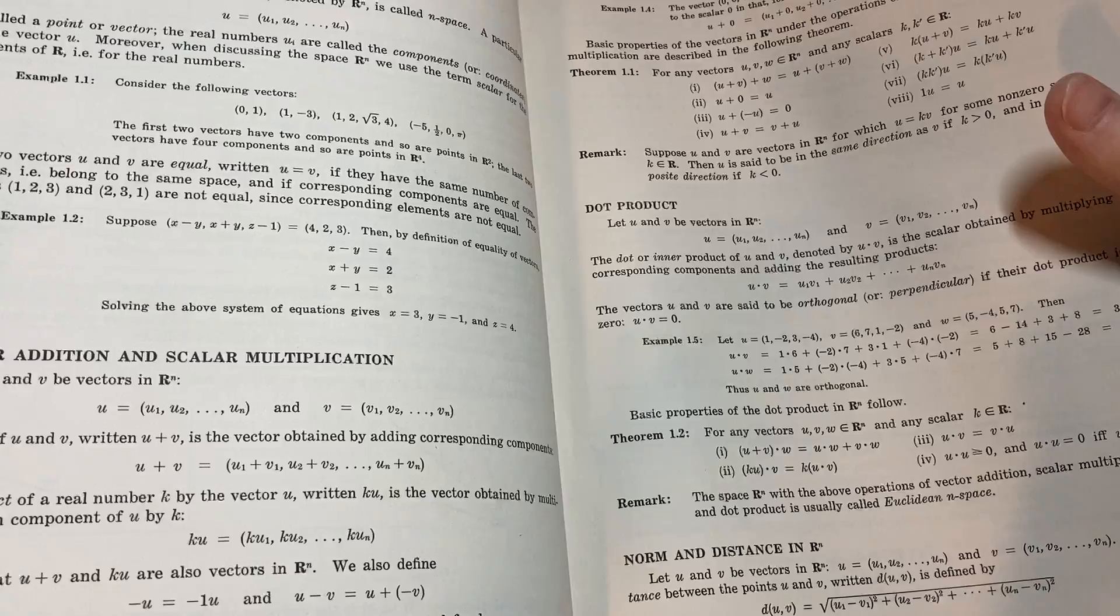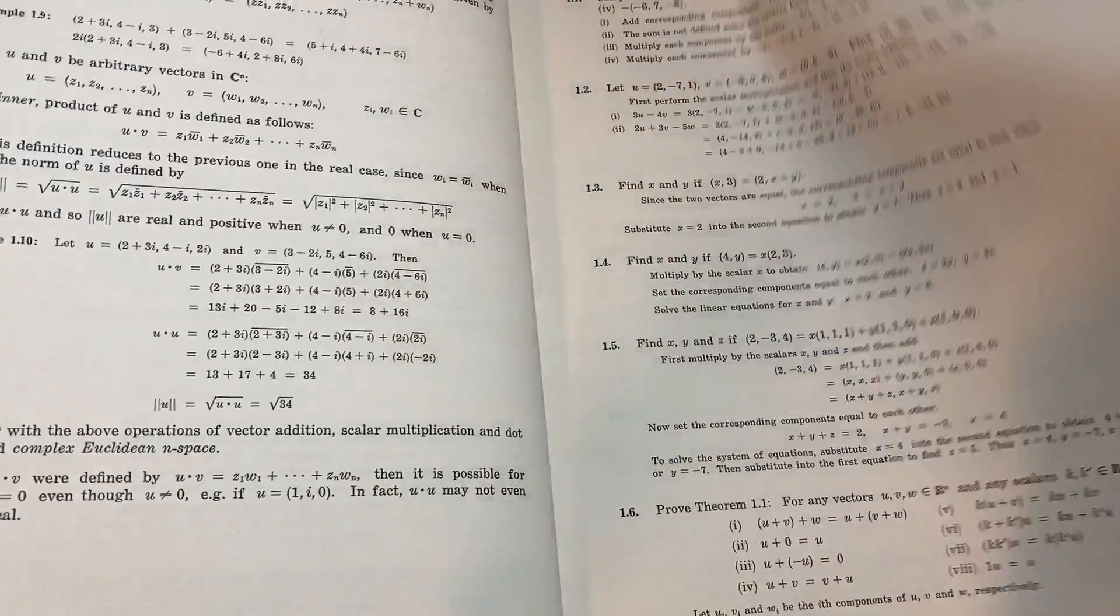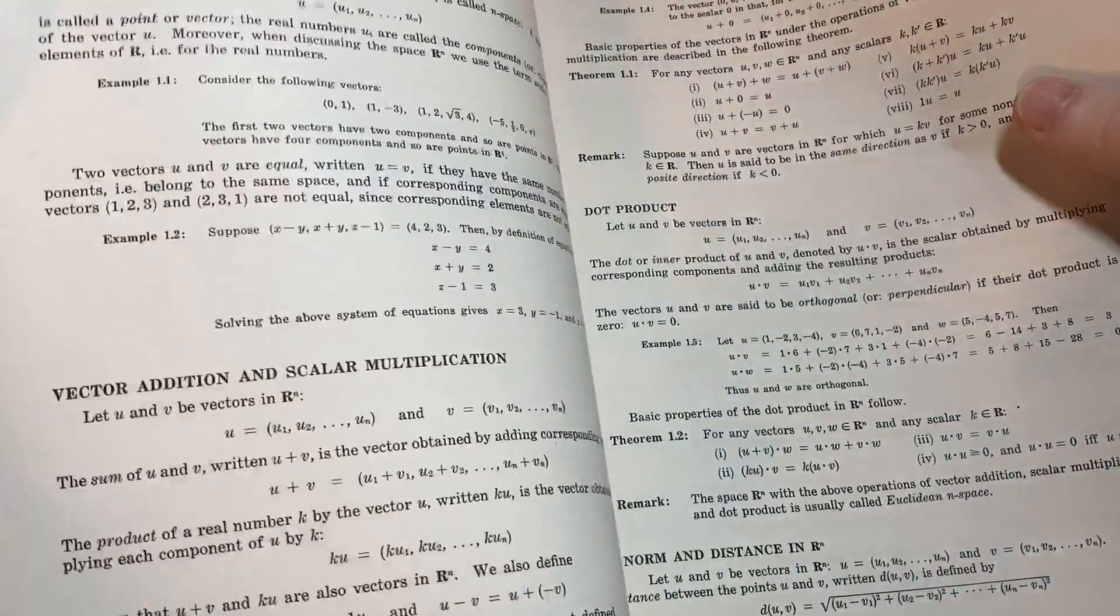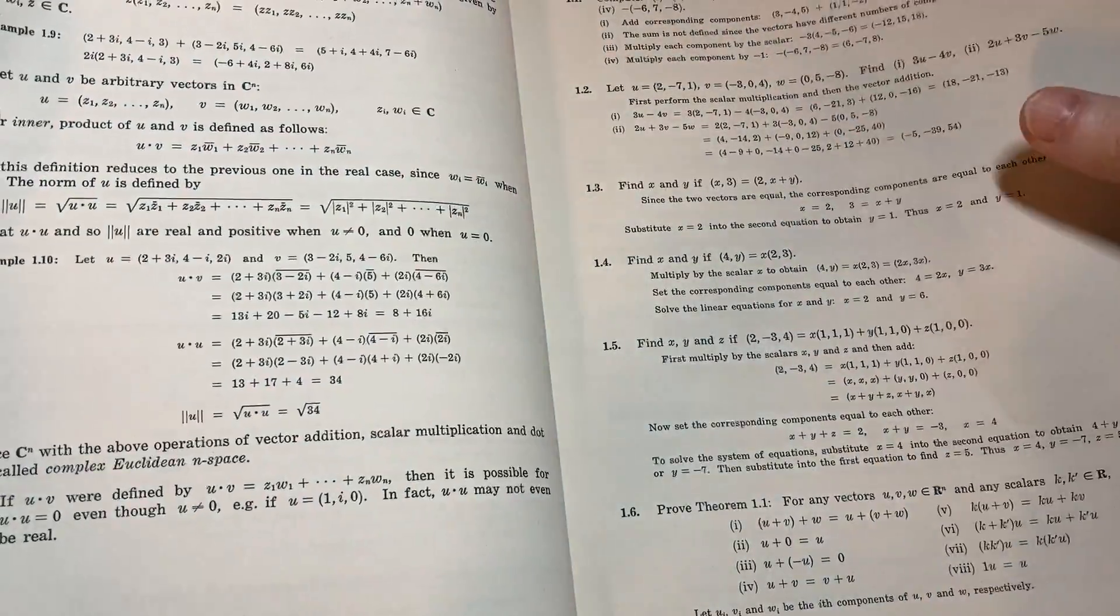So you could do like, you could read the vectors in Rn section, or vector addition and scalar multiplication. And I guess that's going to be all of this too. Vectors in Rn is going to be all of that. So vectors in Rn will actually be, I think, yeah, it's going to include all of this, I think. Just not include the dot product, because it's going to be all of that. The dot product starts next.